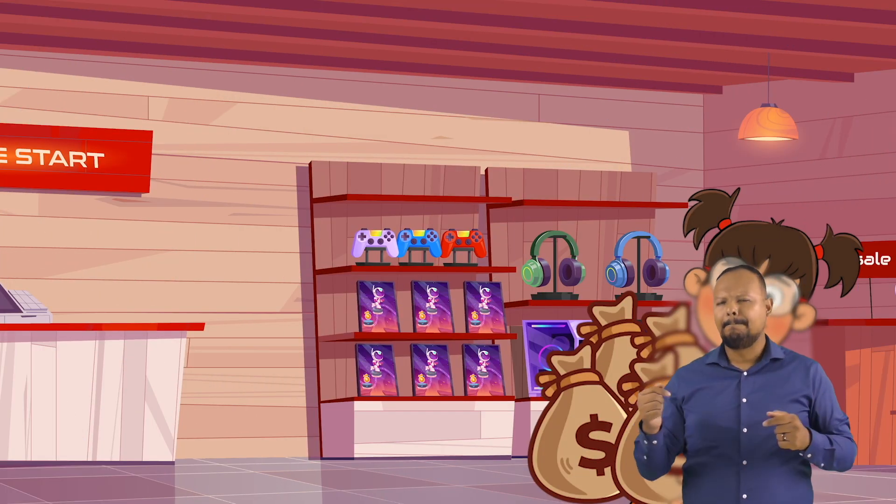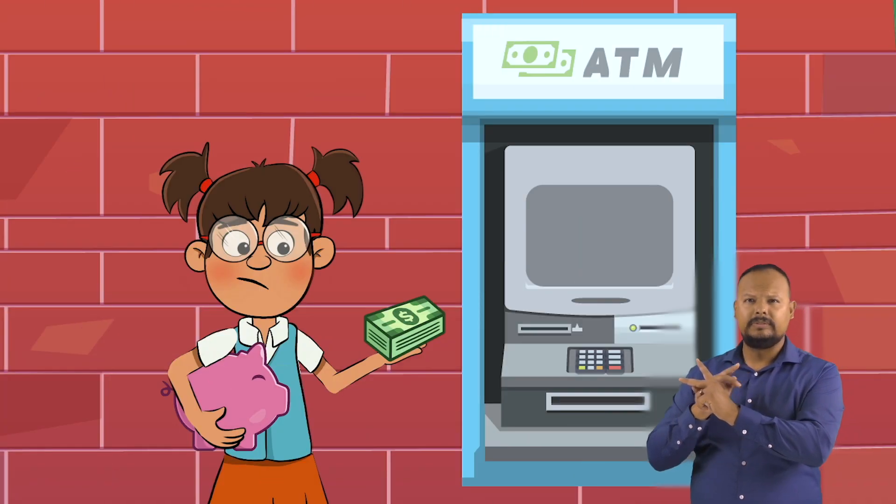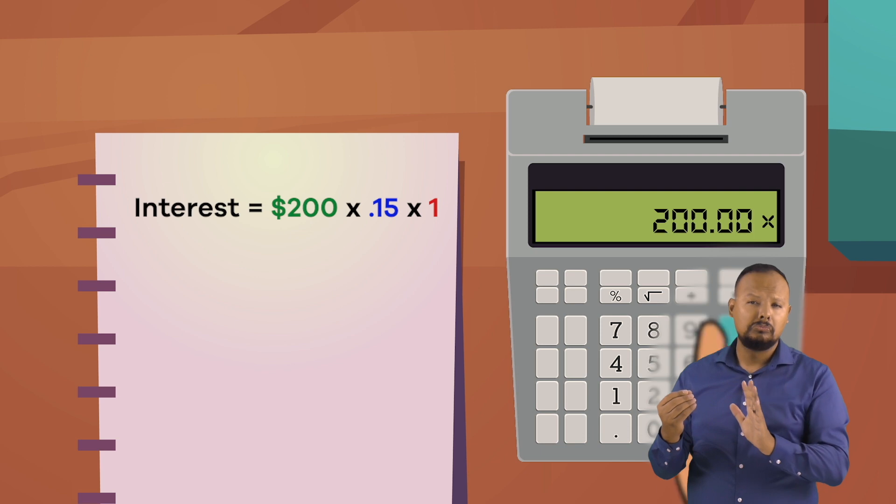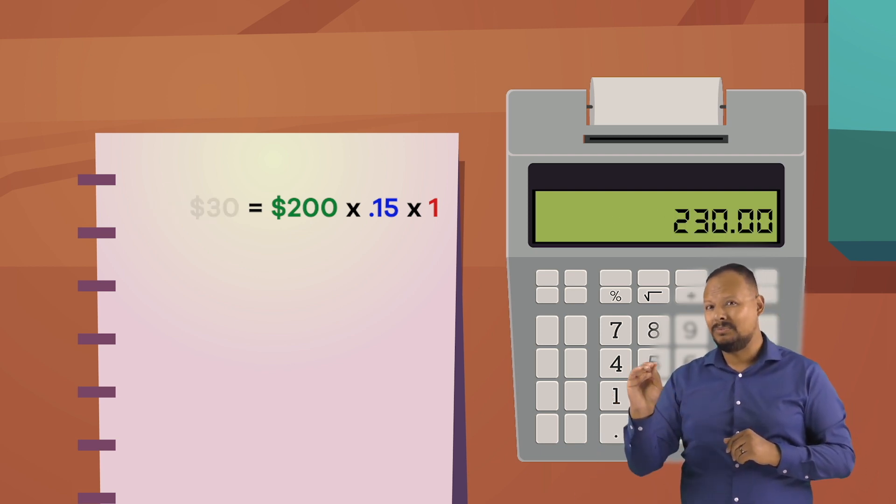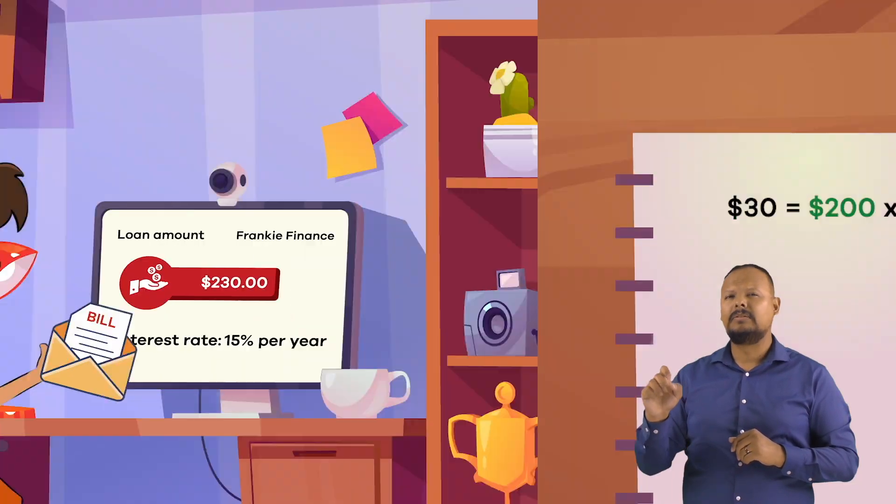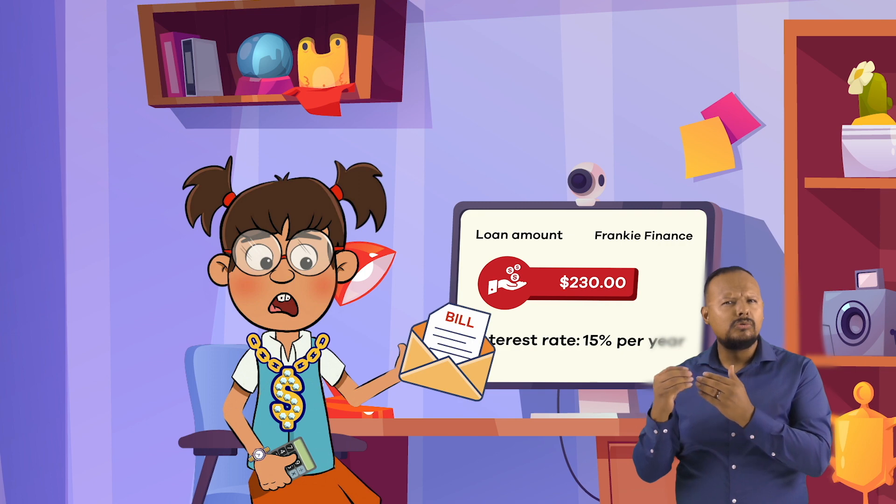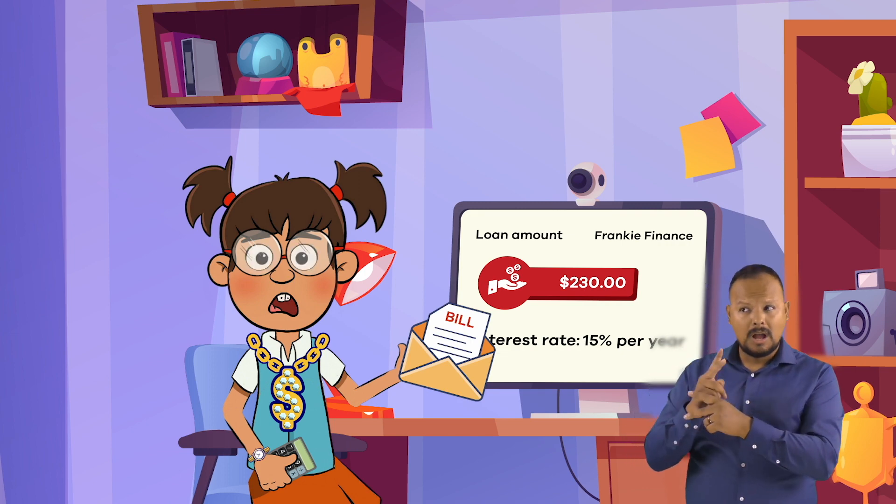Just remember that the opposite is also true. If Frankie borrowed $200 instead of saving it, at a rate of 15% per year, she would owe $30 more than the original amount she borrowed. So, she would owe $230, even though she only borrowed $200.